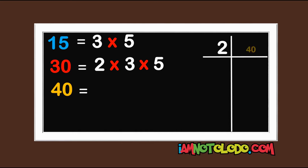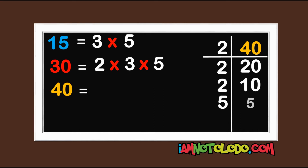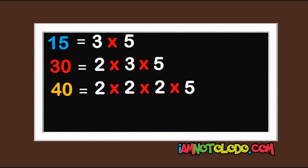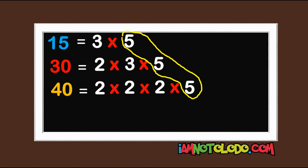2 in 40 is 20, 2 in 20 is 10, 2 in 10 is 5, 5 in 5 is 1. So this becomes 2 times 2 times 2 times 5. The next step is to pick the number that is common to each of them. 5 is here, 5 is here, 5 is here — circle it. 3 is here, 3 is here but 3 is not in the third — so we cannot circle it. 2 is here, 2 is here but 2 is not in the first — so we cannot circle it. The only number they have in common is 5. So our HCF is 5. Did you get it right? Good.